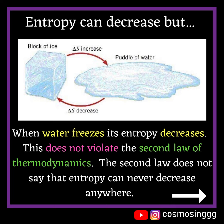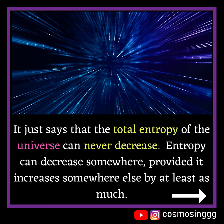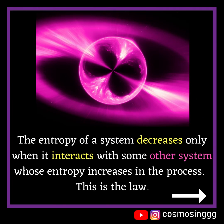The second law does not say that entropy can never decrease anywhere. It just says that the total entropy of the universe can never decrease. Entropy can decrease somewhere, provided it increases somewhere else by at least as much. The entropy of a system decreases only when it interacts with some other system whose entropy increases in the process.